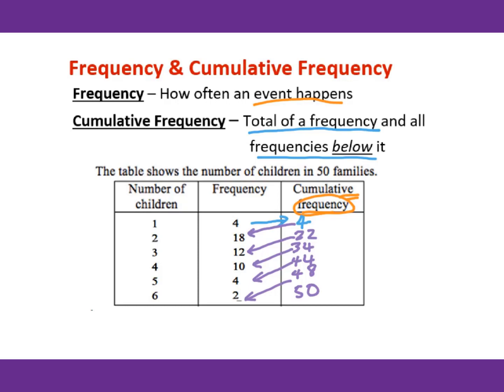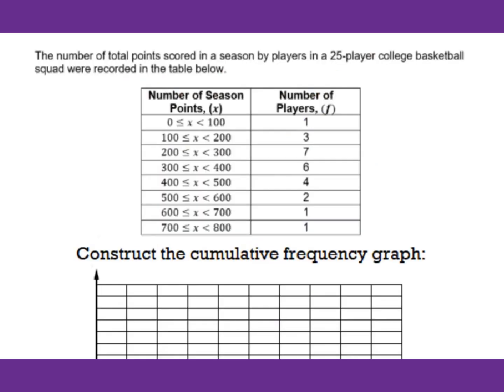How to construct a cumulative frequency graph according to the given table? The number of total points scored in a season by players in a 25-player college basketball squad were recorded in the table below. First of all, we need to figure out the cumulative frequency table.